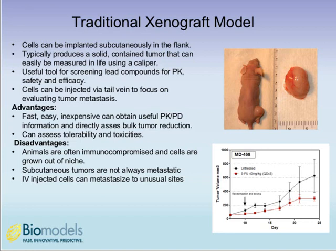Subcutaneous tumors are not always metastatic, or take a long time to become metastatic. If metastases are of interest and cells are injected into the tail vein, a caveat is that these cells can metastasize to unusual sites, so efficacy signals may not hold up in more translational models. In this study, we used a triple-negative breast cancer cell line, MDA-468 — which is also PTEN-null and p53-mutant — with 5-FU as the standard of care chemotherapy. We look for an experimental compound that performs as well or better than standard of care, or works synergistically in combination.